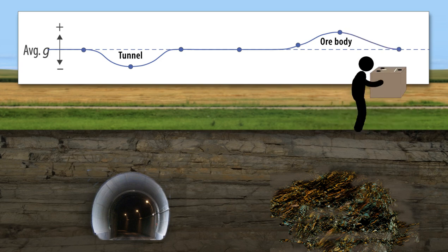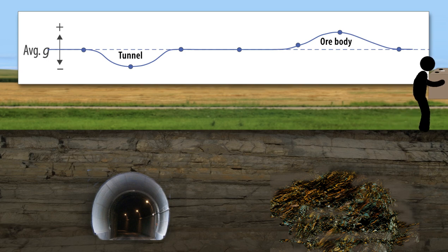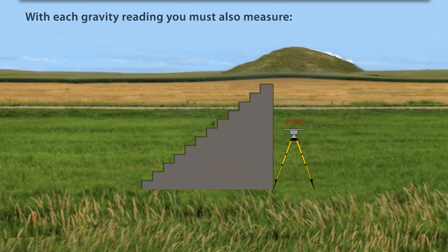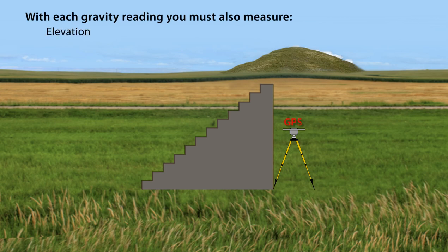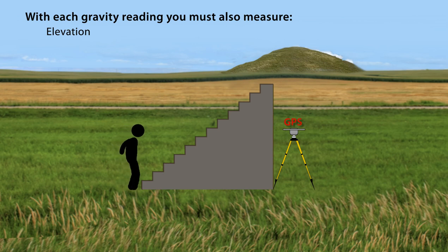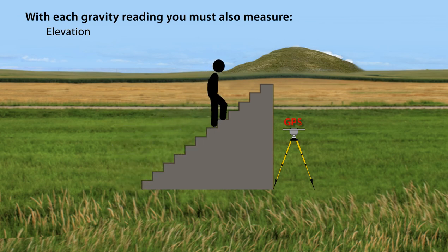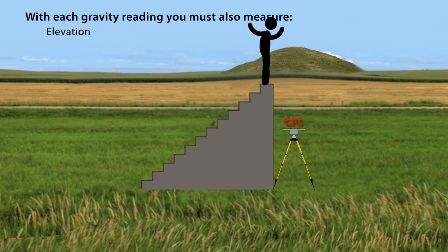Soils, rock layers, and aquifers also affect gravity readings because of their different densities. Remember, gravity depends on elevation — the farther you are away from the center of the Earth, the lower the gravitational attraction. Using a highly sensitive gravity meter, you can measure the decrease in gravitational acceleration as you go higher in a building.